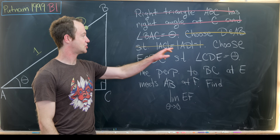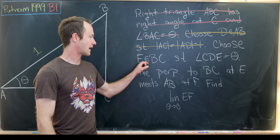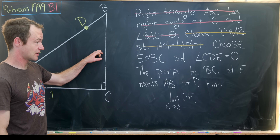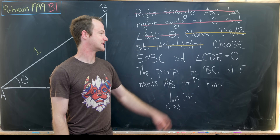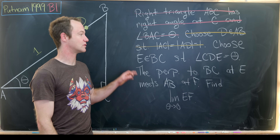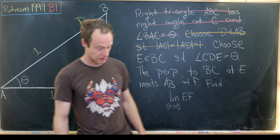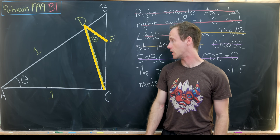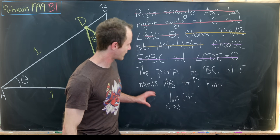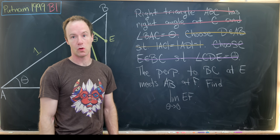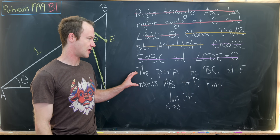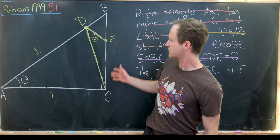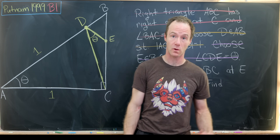We'd like to choose E on line segment BC such that angle CDE equals theta. Let's get that into the picture. Now we've got two more bits here — one more setup and then our goal. We're not going to draw that into the picture just yet, because it'll be useful to fill out parts of this picture beforehand.